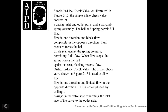Simple Inline Check Valve. The simple inline check valve illustrated in figure 2-12 consists of a casing, inlet and outlet ports, and a ball-and-spring assembly. It permits fluid flow in one direction and blocks flow in the complete opposite direction. Fluid pressure forces the ball out of the seat against the spring pressure, permitting fluid flow. When flow stops, the spring forces the ball against the seat, blocking reverse flow. Orifice Inline Check Valve. The orifice check valve shown in figure 2-13 is used to allow free flow in one direction and limited flow in the opposite direction. This is accomplished by drilling a passage in the valve seat connecting the inlet side of the valve to the outlet side.